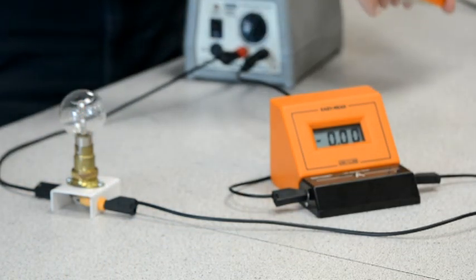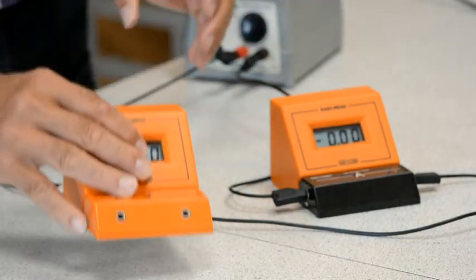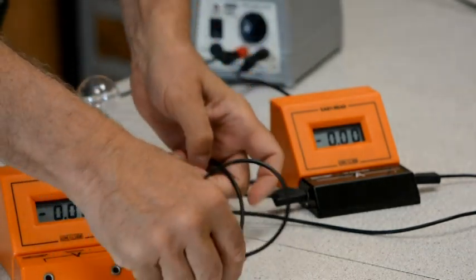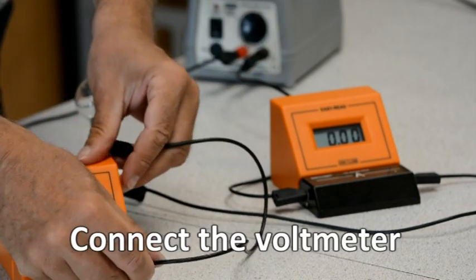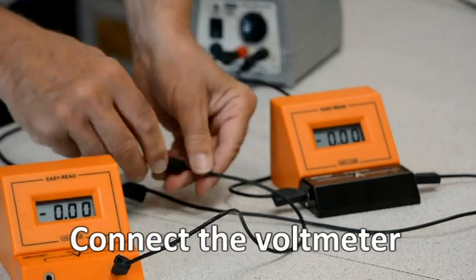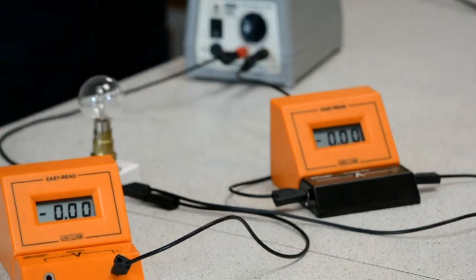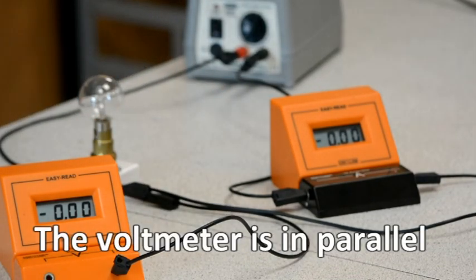Now we're going to measure the potential difference across the light bulb. Voltmeters are connected in parallel with the component they're measuring, so the lead goes from one side of the lamp to the voltmeter and from the voltmeter back to the other side of the lamp.